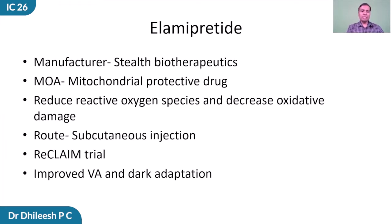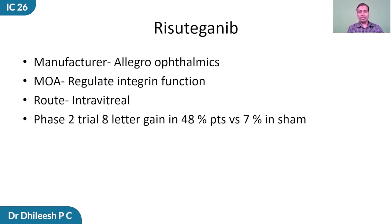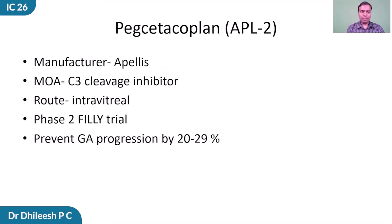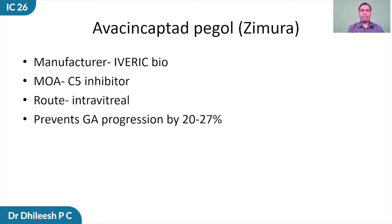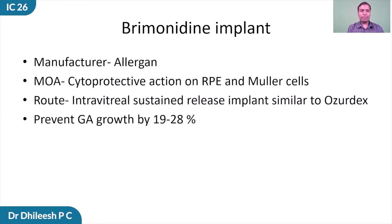Coming to drugs for dry AMD: Elamipretide by Stealth BioTherapeutics is a mitochondrial protective drug which reduces reactive oxygen species and decreases oxidative stress, delivered by subcutaneous injection. The ReCLAIM trial found that it improved visual acuity and dark adaptation in dry AMD. Risuteganib, manufactured by Allegro, regulates integrin function as an intravitreal medication; phase 2 trials showed 8-letter gain in 48% of patients versus 7% in sham injection group. Pegcetacoplan, manufactured by Apellis, is a complement C3 cleavage inhibitor given by intravitreal injection, preventing geographic atrophy progression by around 20 to 29%. Avacincaptad pegol, manufactured by Aerie Bio, acts by C5 inhibition and also prevented geographic atrophy progression by 20 to 27%.